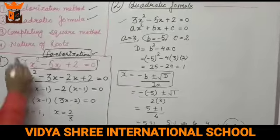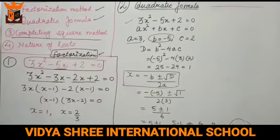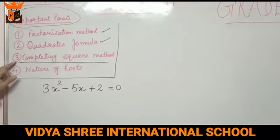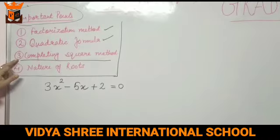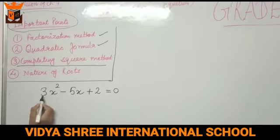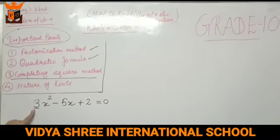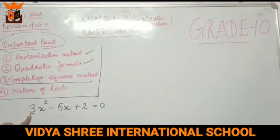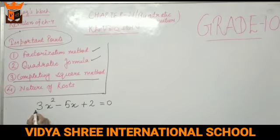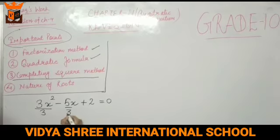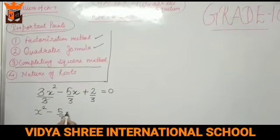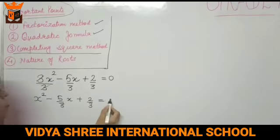Now we will solve this equation by the third method — completing square method. The first step of completing square method is that the coefficient of x squared must be 1. Here the coefficient of x squared is 3, so we divide all terms by 3. This gives x squared minus 5 by 3 x plus 2 by 3 equals 0.